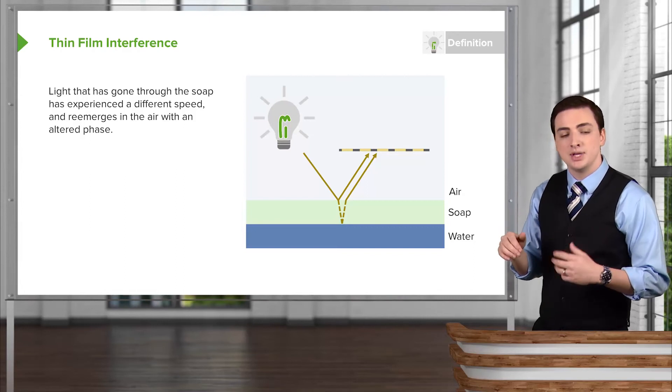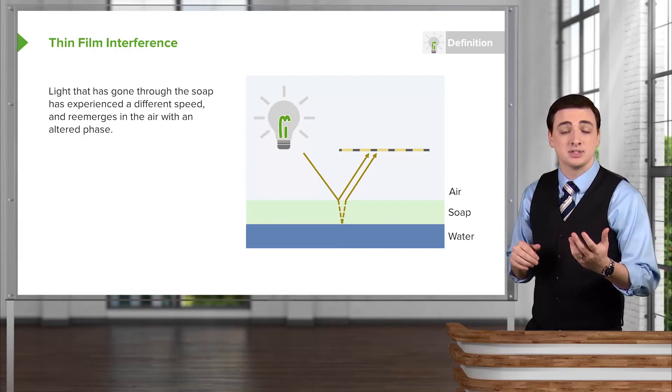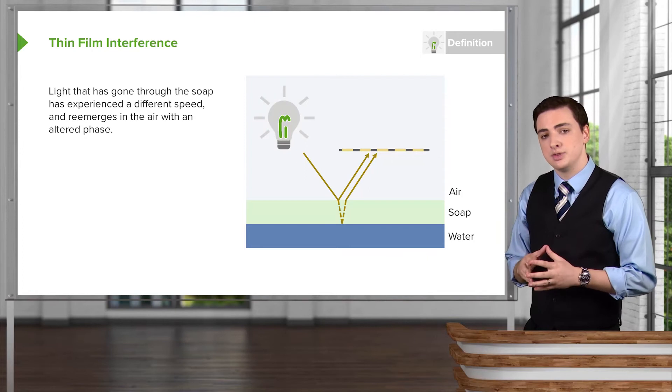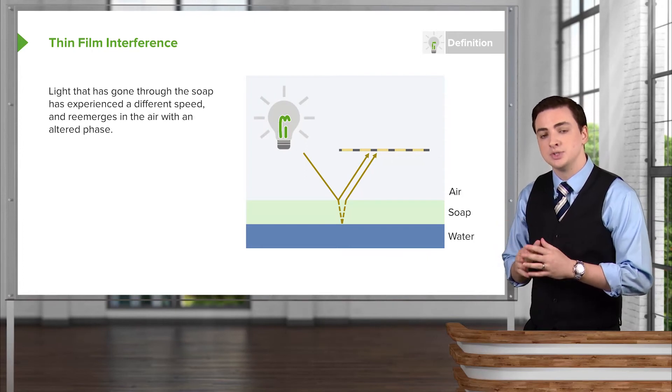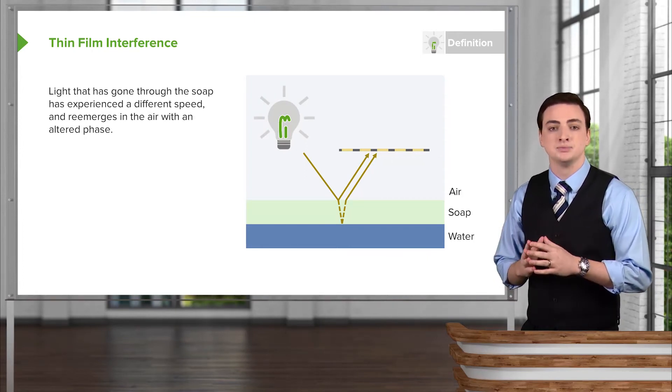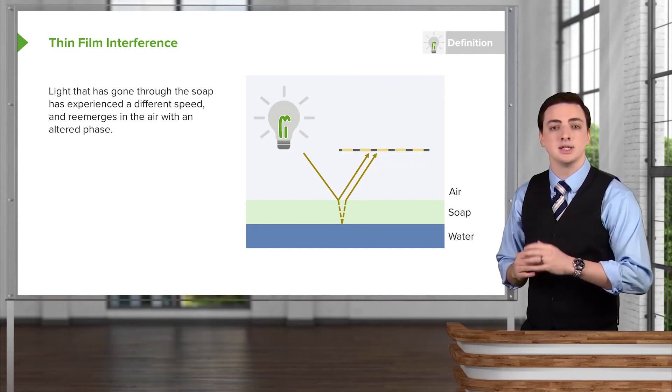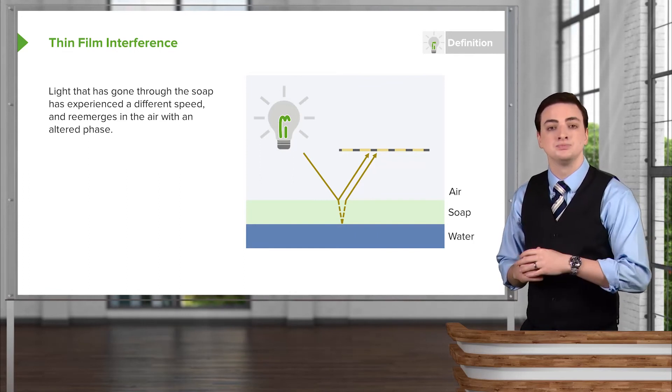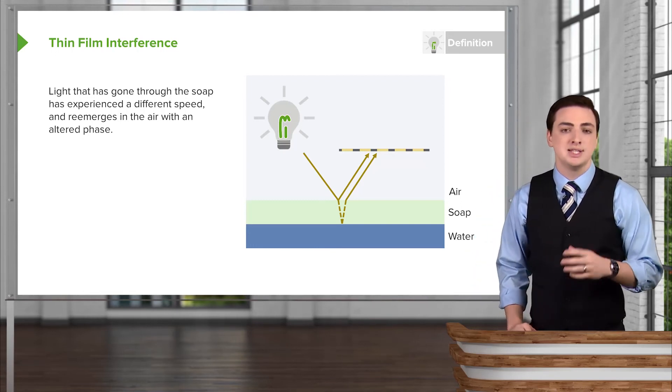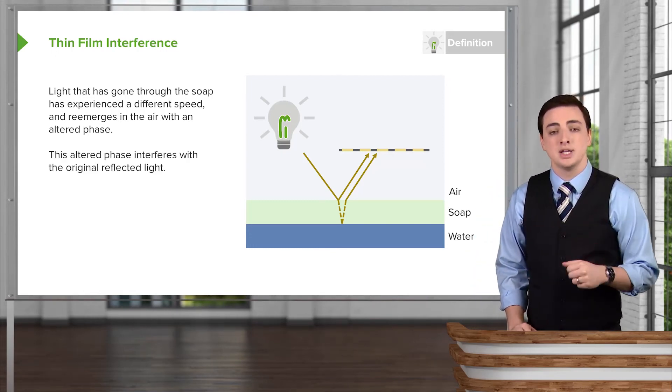What will happen is some of that light, as we'll see when we get to optics very soon, will go into the medium at a slightly bent angle and then come back out of the medium, whereas some of the other light will instead just reflect immediately rather than going in and then back out.